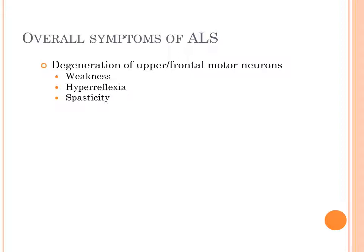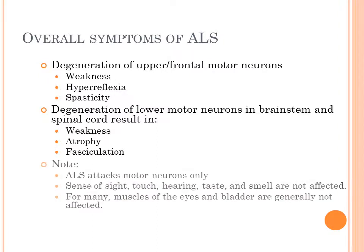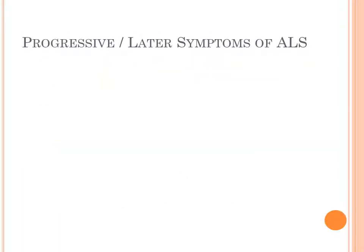Overall symptoms of ALS: since you have degeneration at the neuronal level — especially the upper motor neurons — you'll see hyperreflexia, spasticity, as well as some weakness. If you have lower motor neuron or brainstem involvement, you may see weakness, muscle atrophy, and fasciculations. ALS attacks motor neurons only, which means everything else is intact — your intelligence, sight, taste, hearing, touch, and smell are all preserved. It is a muscle and nerve degeneration.